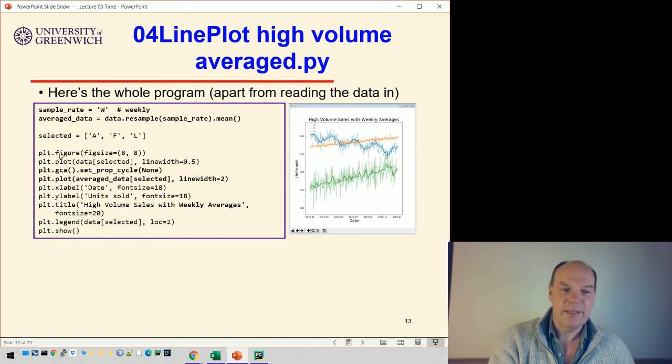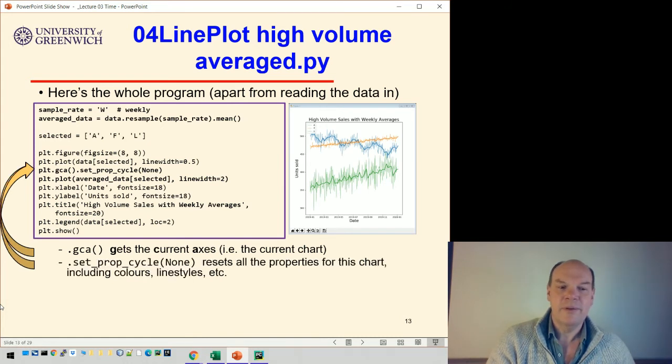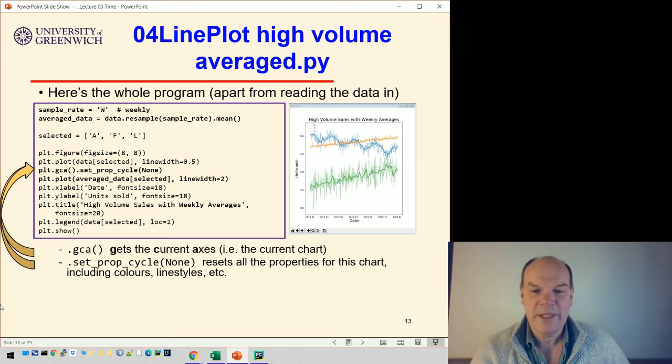If you look at the code, then we plot the data - so plt.plot draws the original data. Then we reset the prop_cycle, which resets all the properties for this chart including the colors and the line styles.